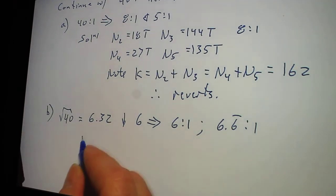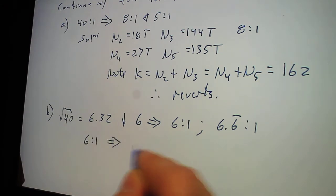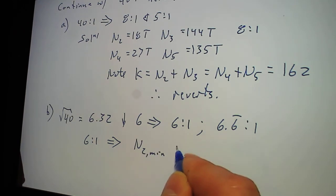So what I did was, I said with a 6 to 1, our N2 min, I could use 16T. Going back to that table.